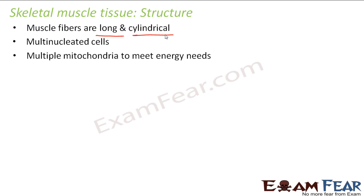Skeletal muscle tissue cells also have multiple mitochondria to meet energy needs. Skeletal muscle tissue helps in the movement of our skeleton, and in order to make movements, we need a lot of energy. Mitochondria — the powerhouse of the cell — generates that energy. When you have more mitochondria, you can generate more energy, which you use for movements like exercise, dancing, or jogging. That is why skeletal muscle cells have multiple nuclei and mitochondria.